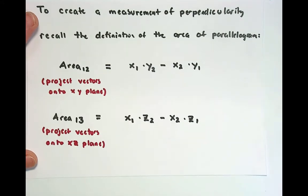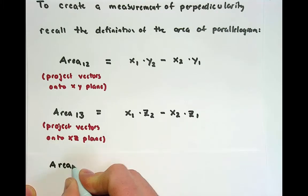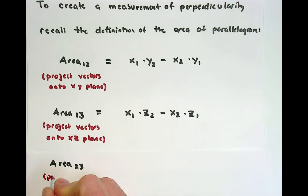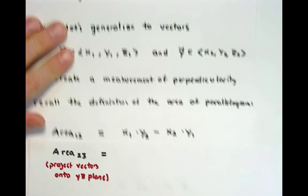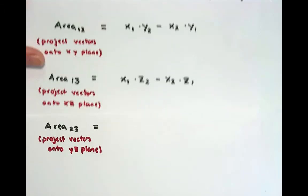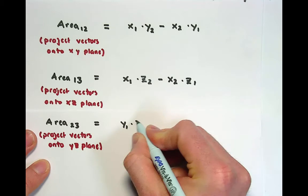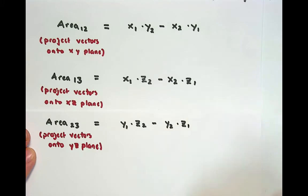Then we have the last area, which happens when we project the vectors in R3 onto the yz plane — the projection of vectors x and y. This happens when we delete the x component and find the area of the parallelogram in y and z. Notice there's a pattern: this would be y1 z2 minus y2 z1.